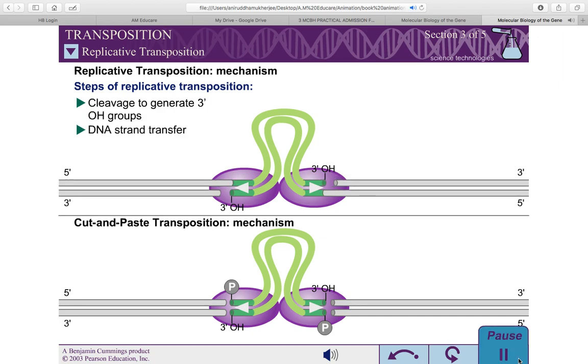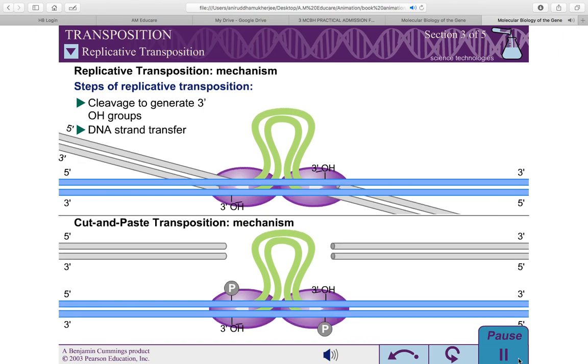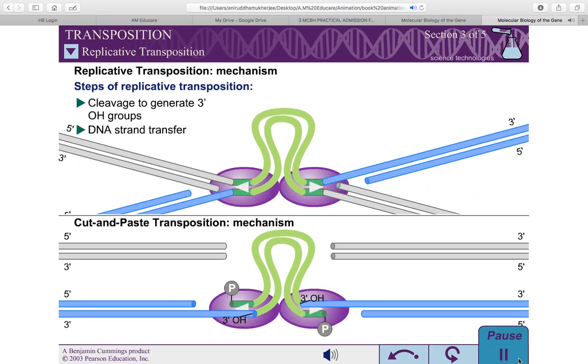As in cut-and-paste transposition, the 3' hydroxyls of the transposon DNA then attack the phosphodiester bonds at the target DNA. However, the 5' ends of the transposon sequence remain joined to the initial flanking DNA.